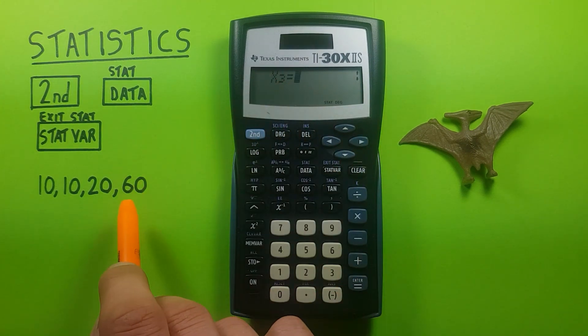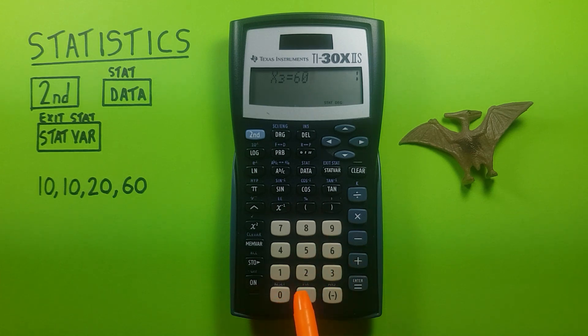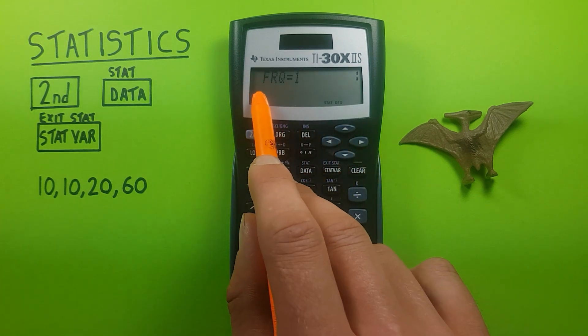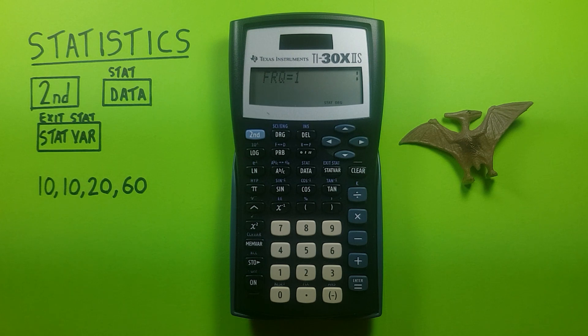x3. That's 60 in our data set. So there we go. Down, and we get frequency of 1. That's correct. So we have our data set entered now.